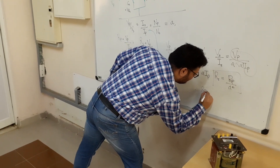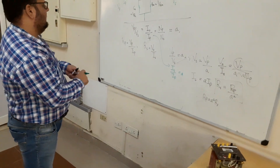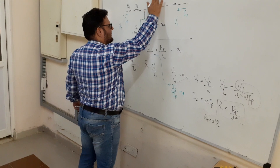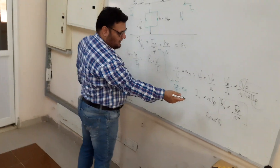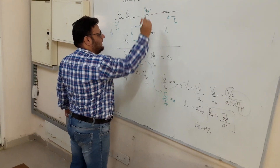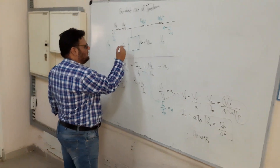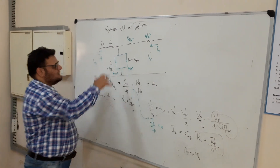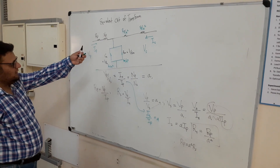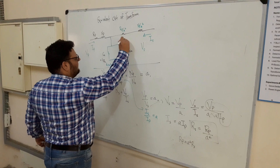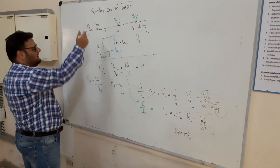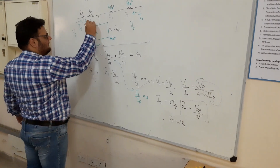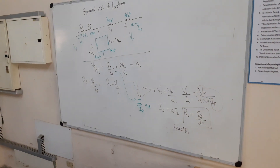We can write RP = A² × RS. So if we refer the primary side and keep primary as it is, we replace RS as RP/A² and XP/A². Similarly RC becomes RC/A² and XM becomes XM/A². Alternatively, if we keep RS as it is, we represent RP as A²RS and XP as A²XS. This terminology is called referring.